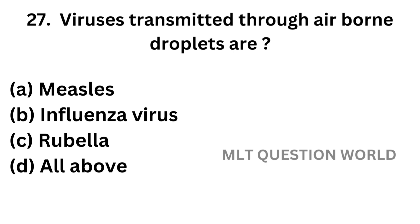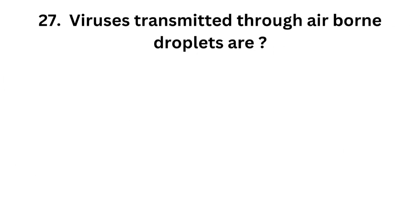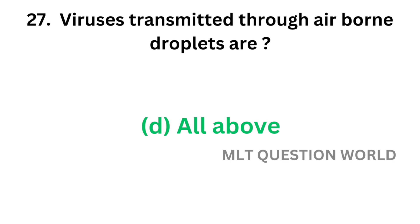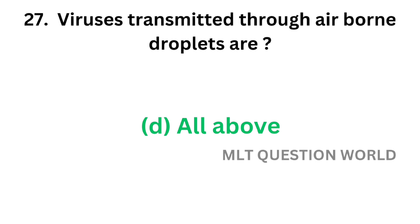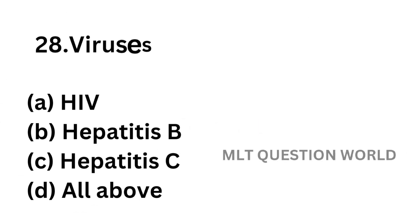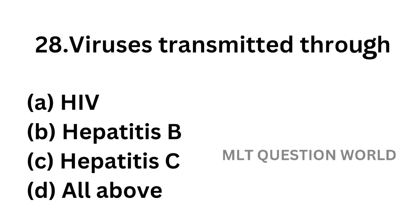Question number 27. Viruses transmitted through airborne droplets are: option A, Measles; option B, Influenza virus; option C, Rubella; option D, All of the above. The correct answer is option D, All of the above. Measles, influenza, and rubella can be transmitted through airborne droplets.